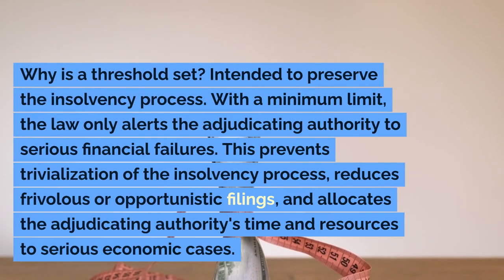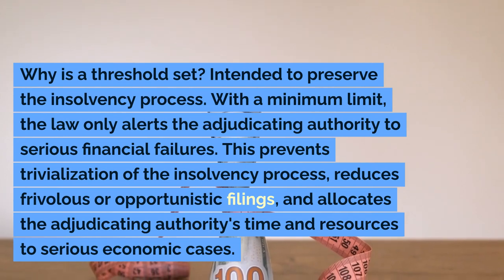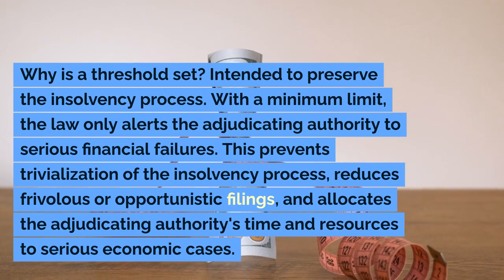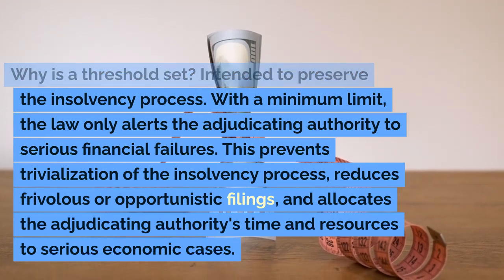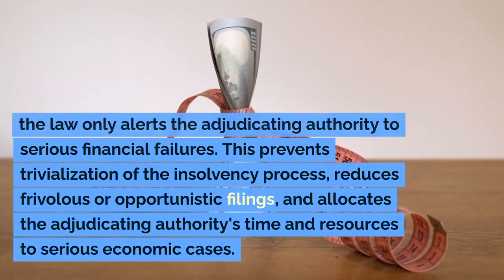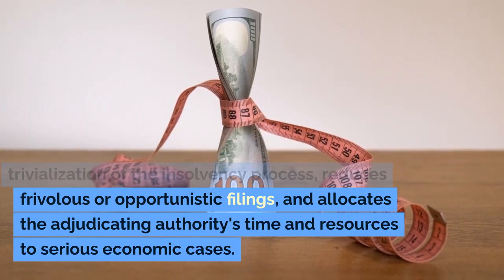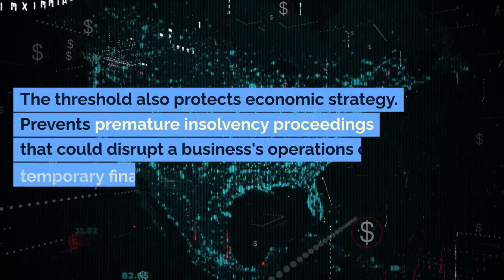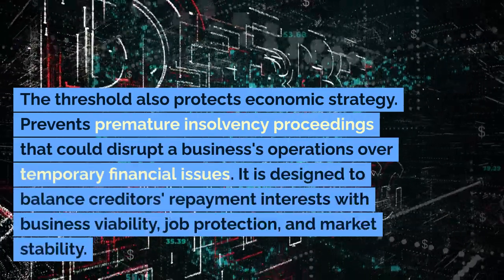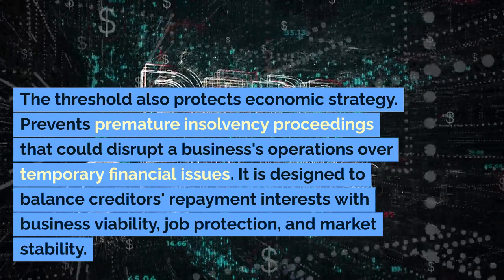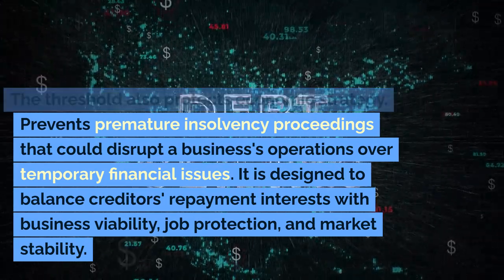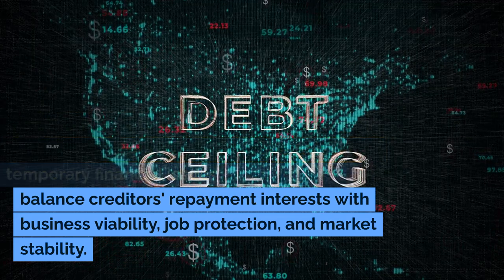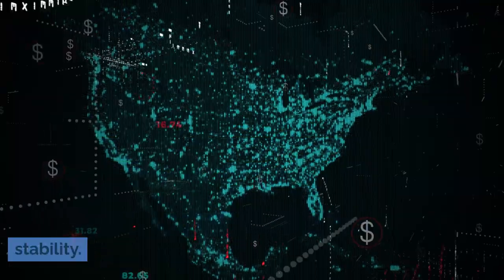Why is a threshold set? It is intended to preserve the insolvency process. With a minimum limit, the law only alerts the adjudicating authority to serious financial failures. This prevents trivialization of the insolvency process, reduces frivolous or opportunistic filings, and allocates the adjudicating authority's time and resources to serious economic cases. The threshold also protects economic strategy by preventing premature insolvency proceedings over temporary financial issues, balancing creditors' repayment interests with business viability, job protection, and market stability.